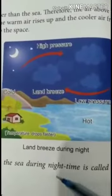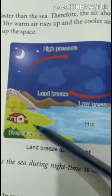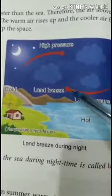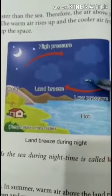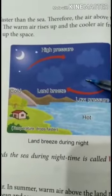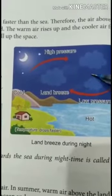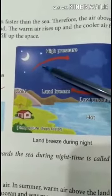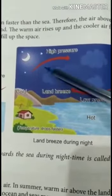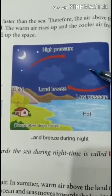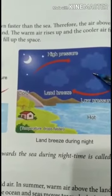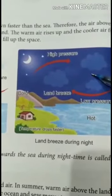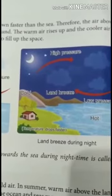Next is land breeze. During night time, land gets cooled down faster. Then the air above the sea is warm, that hot air rises up, and to fill the place of the warm air, cooler air from the land rushes towards the sea. This arrow shows towards the sea — that is called land breeze. Hope you have understood this topic. Thank you for watching.